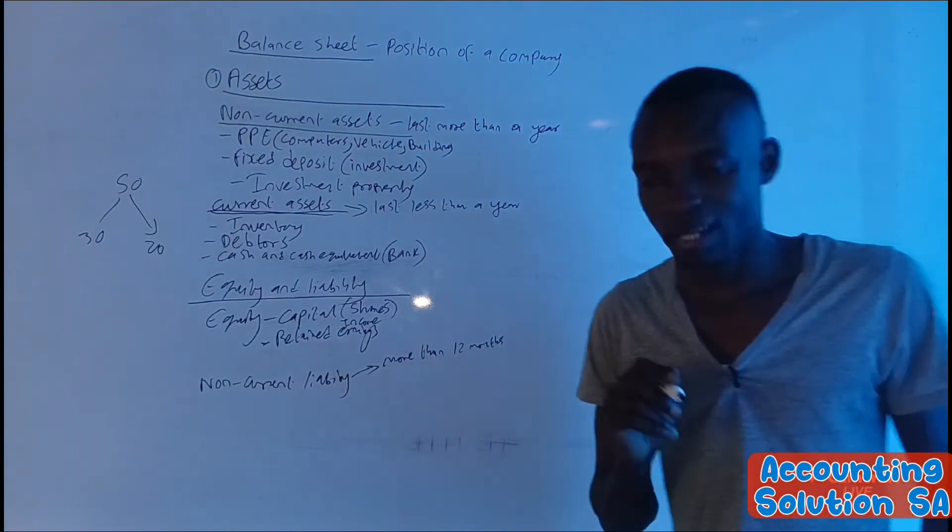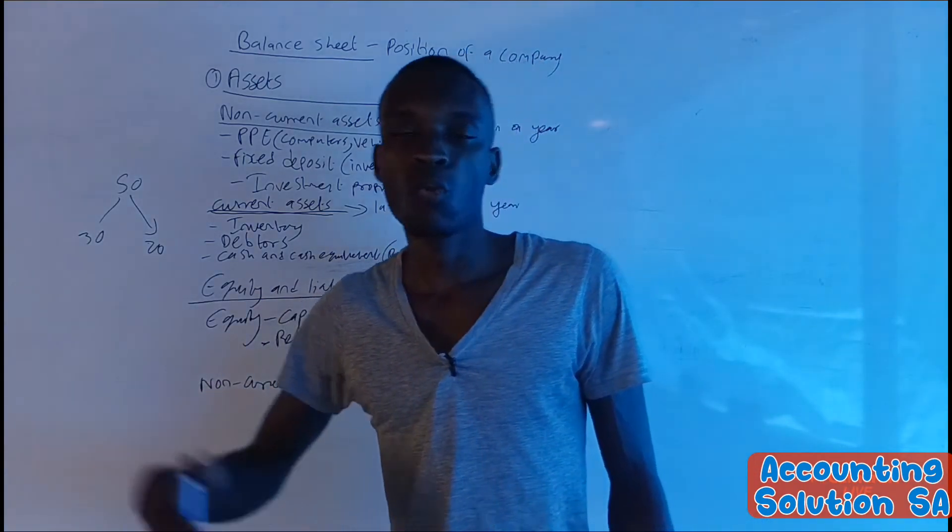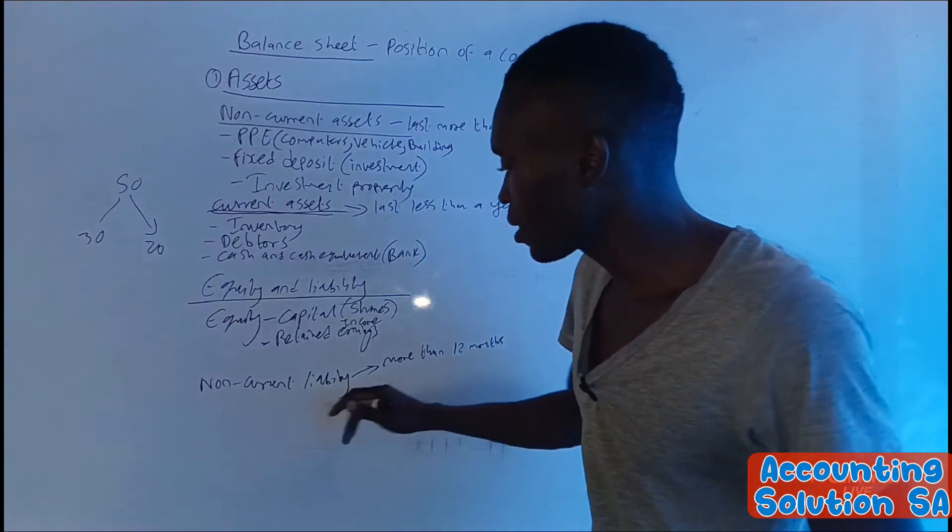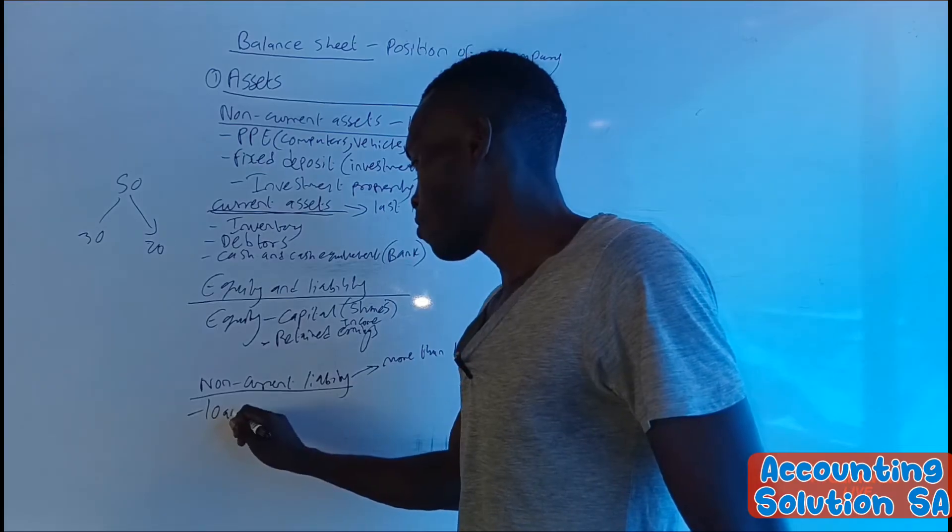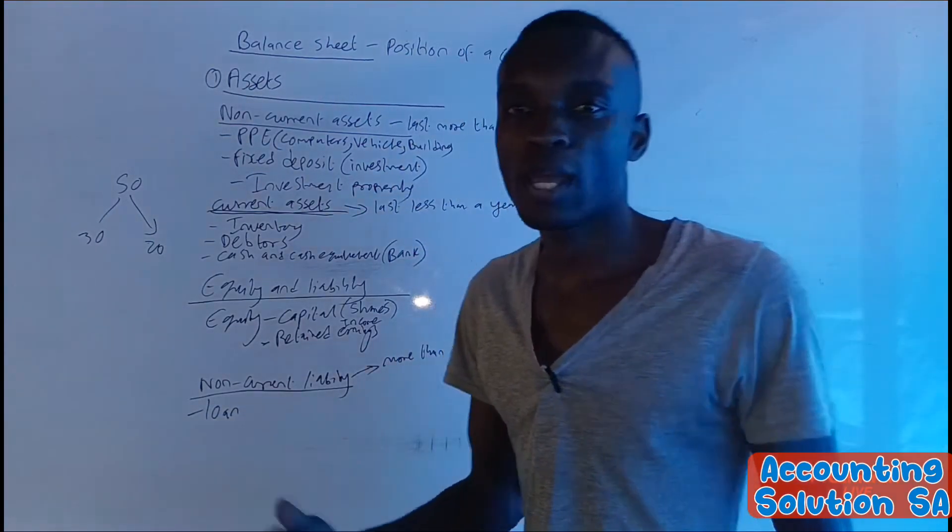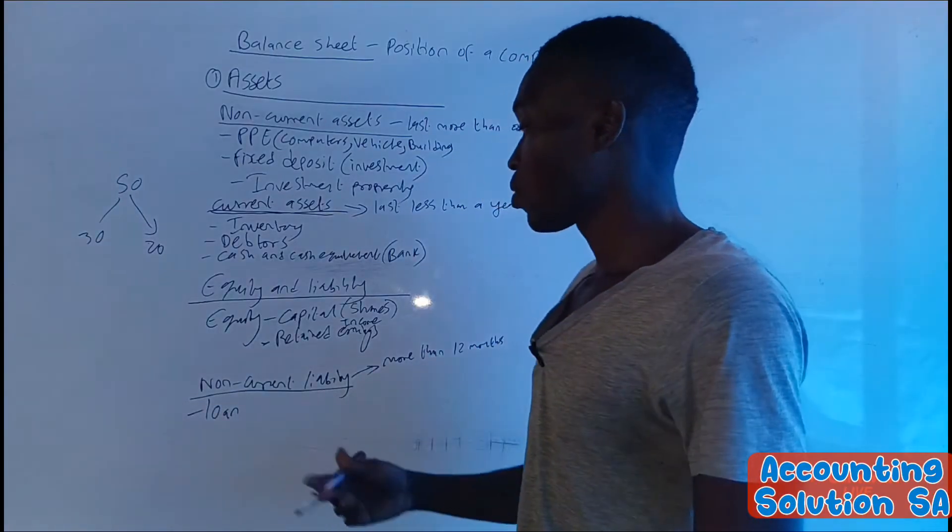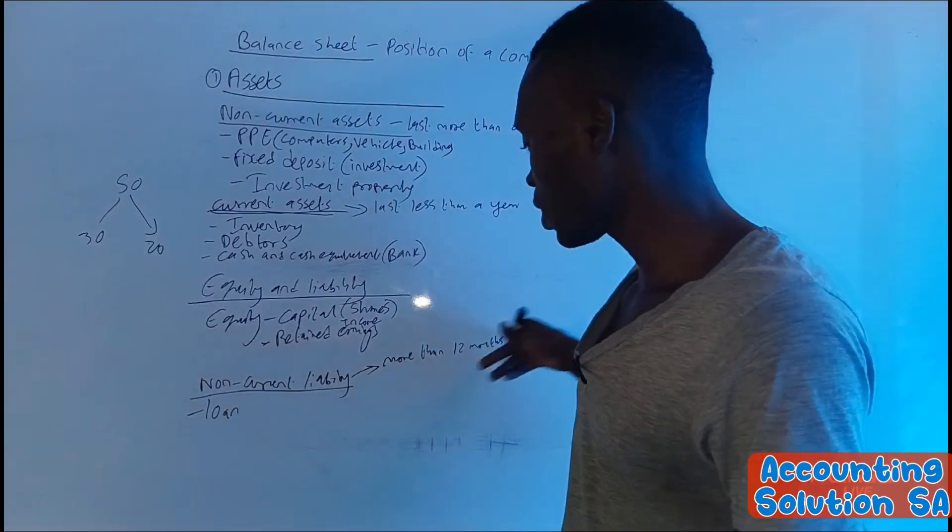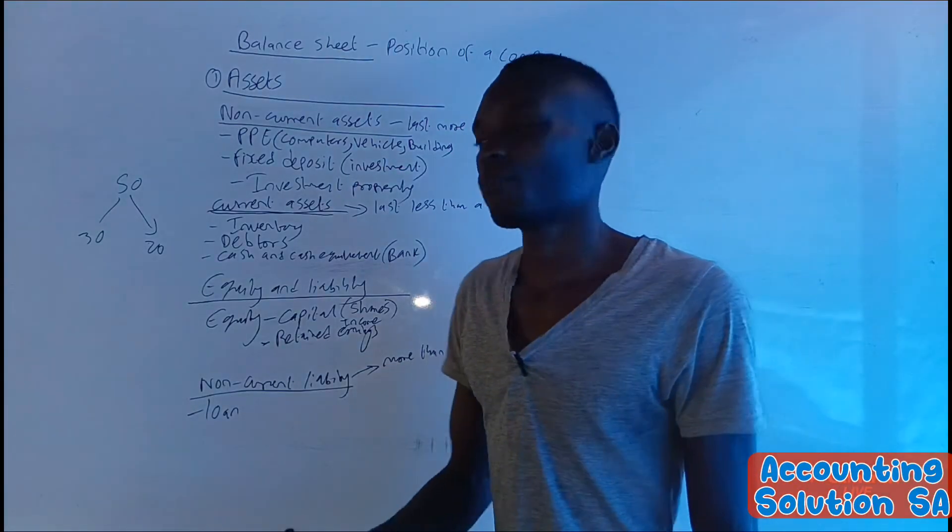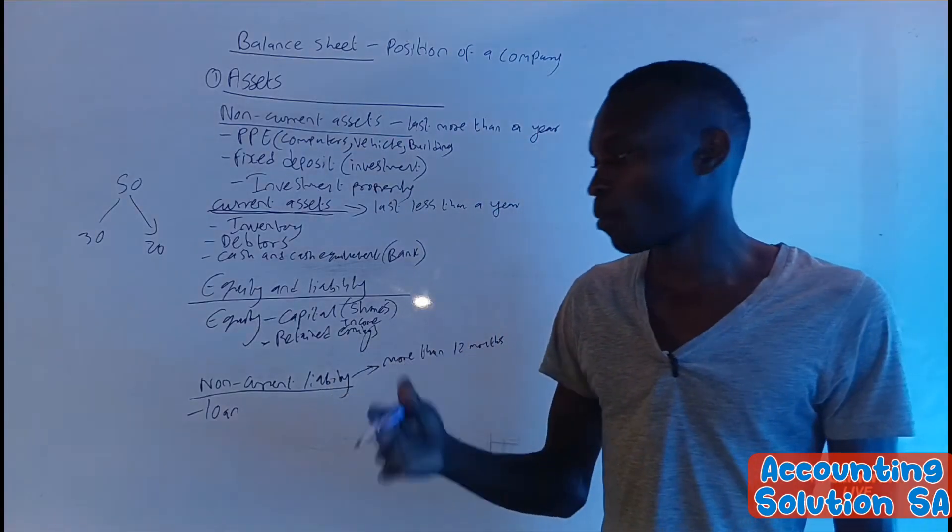For example, when we talk about liability, we owe someone. As a company, we are owing someone. In this case, a good example is loan from the bank. If we borrow a loan from the bank and we expect to pay that loan after five years, we call it non-current liability because it's long term, more than 12 months. We can have a loan or mortgage bond.